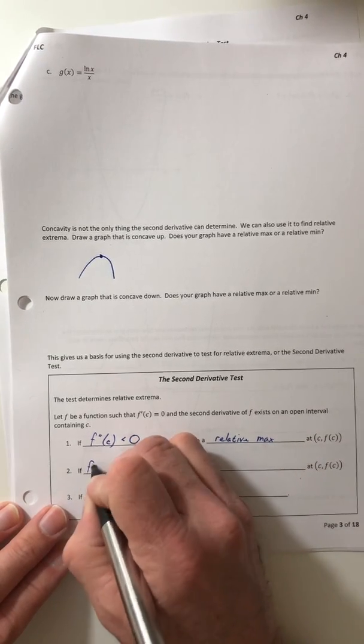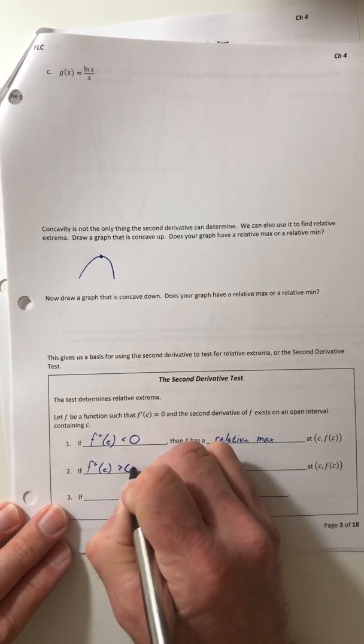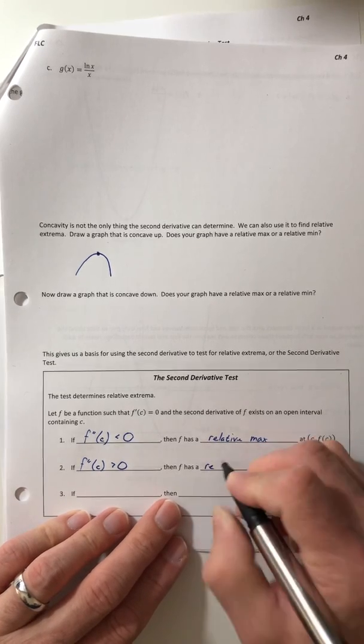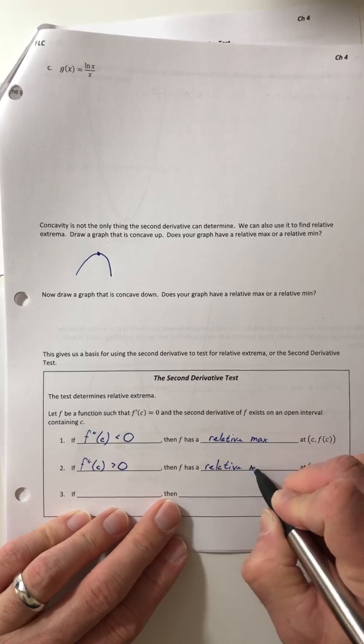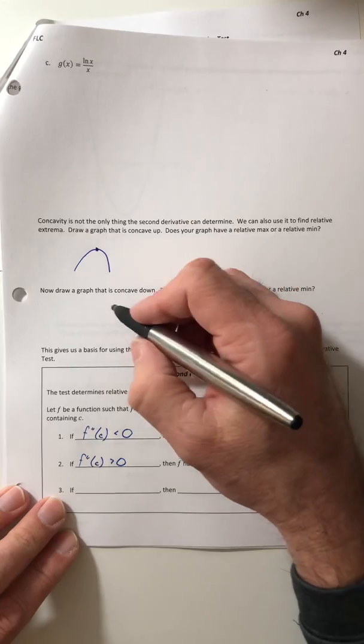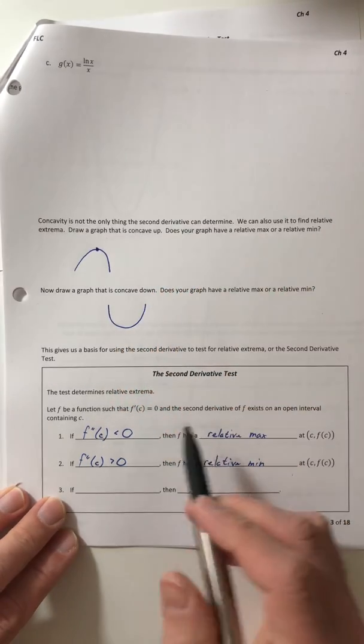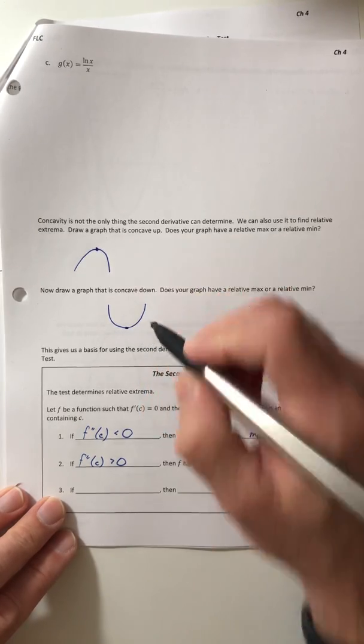So second case, if the second derivative is positive, then F has a relative min at C, F of C at that point. And again, it's because if it's positive, that means the graph is concave up, and you've got a minimum sitting right down there, right at the bottom.